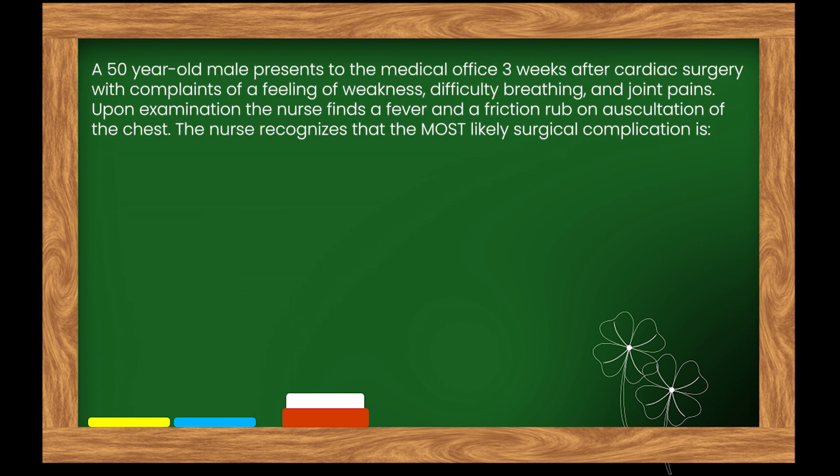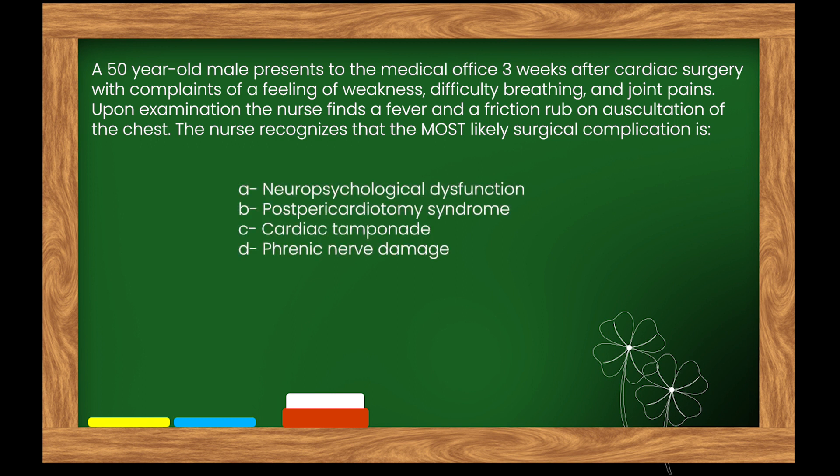Here is our next question. A 50-year-old male presents to the medical office three weeks after cardiac surgery with complaints of weakness, difficulty breathing, and joint pains. Upon examination the nurse finds a fever and a friction rub on auscultation of the chest. The nurse recognizes the most likely surgical complication is: Options: A. Neuropsychological dysfunction. B. Post-pericardiotomy syndrome. C. Cardiac tamponade. D. Phrenic nerve damage.